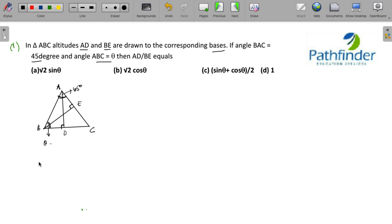Now, to solve this question, all you require to know is for any right angle triangle, sine theta must be perpendicular upon hypotenuse. So if you know this, let us take sines of certain angles in triangle ABE first.